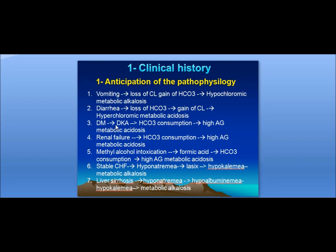As the patient develops diabetic ketoacidosis, bicarbonate will be consumed, so we will develop high anion gap metabolic acidosis. In renal failure, bicarbonate will be consumed by fixed acids, also developing high anion gap metabolic acidosis. Methanol intoxication will be associated with the formation of formic acid to consume bicarbonate, also developing high anion gap metabolic acidosis.